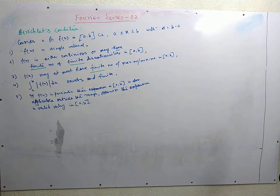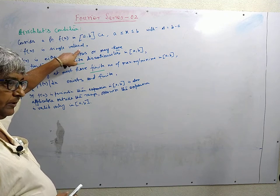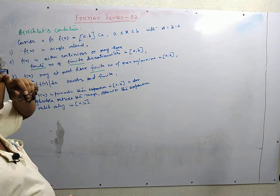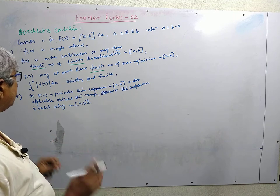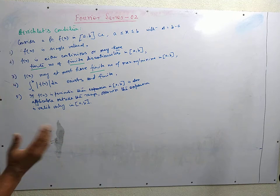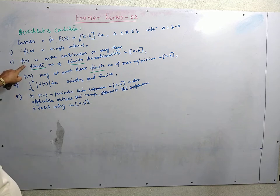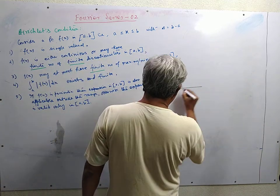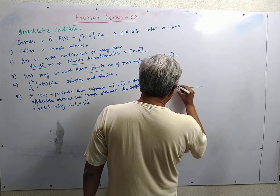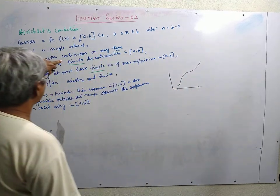The Dirichlet condition says that the function f of x is single-valued. That means multiple-valued functions are not included. If you have a multiple-valued function then we have to divide it into two separate functions. Second part: f of x is continuous in a to b, so if f of x is continuous in a to b, then we can write it like this — this type of function.